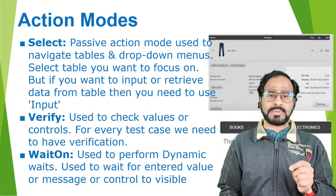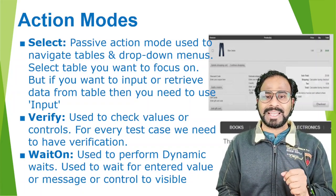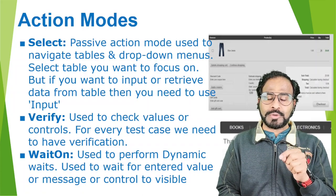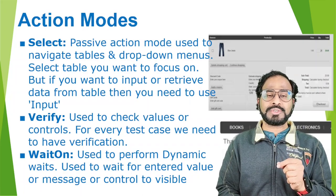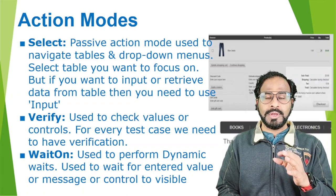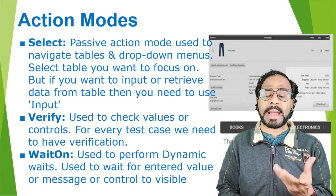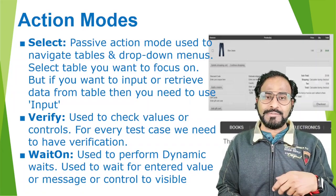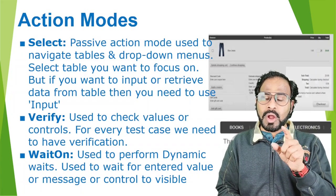What is action mode select? This is a passive action mode used to navigate tables and drop-down menus and select the table you want to focus on. When you use the action mode called select, it is to select a table or a drop-down, but not to send any values to the control. If you want to input or retrieve data from a particular table, you need to use action mode input, not select.